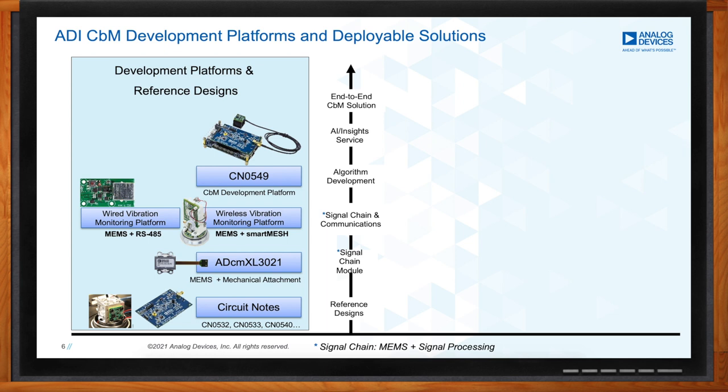CN0532 showcases our industry-leading MEMS sensors like the ADXL1002 with an IEP interface — IEP stands for Integrated Electronic Piezoelectric interface. This would be used by customers who want to replace piezo sensors. CN0533 is very similar but with a 4 to 20 milliamp interface. CN0540 is a circuit note that showcases Analog Devices' high-fidelity data acquisition solutions — in this case an IEP interface with a 24-bit data acquisition solution.